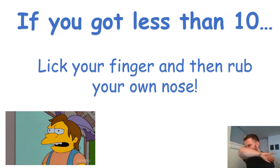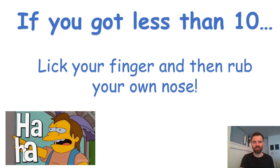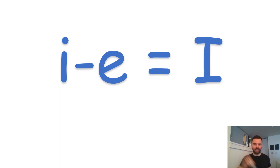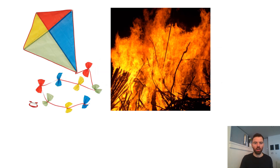Next sound — the I sounds. The E with the magic E at the end makes it an I, so it changes that vowel sound to an I.